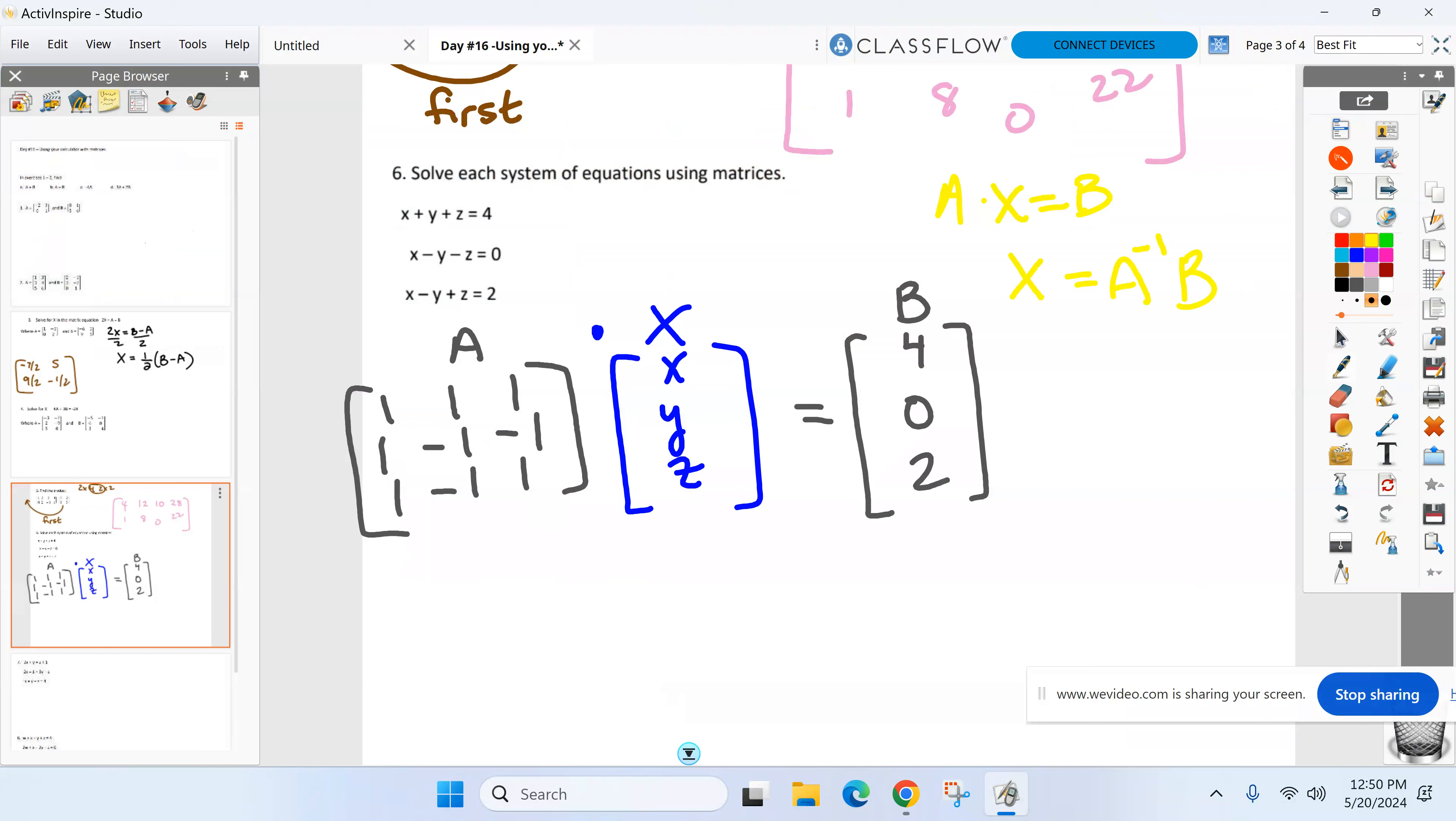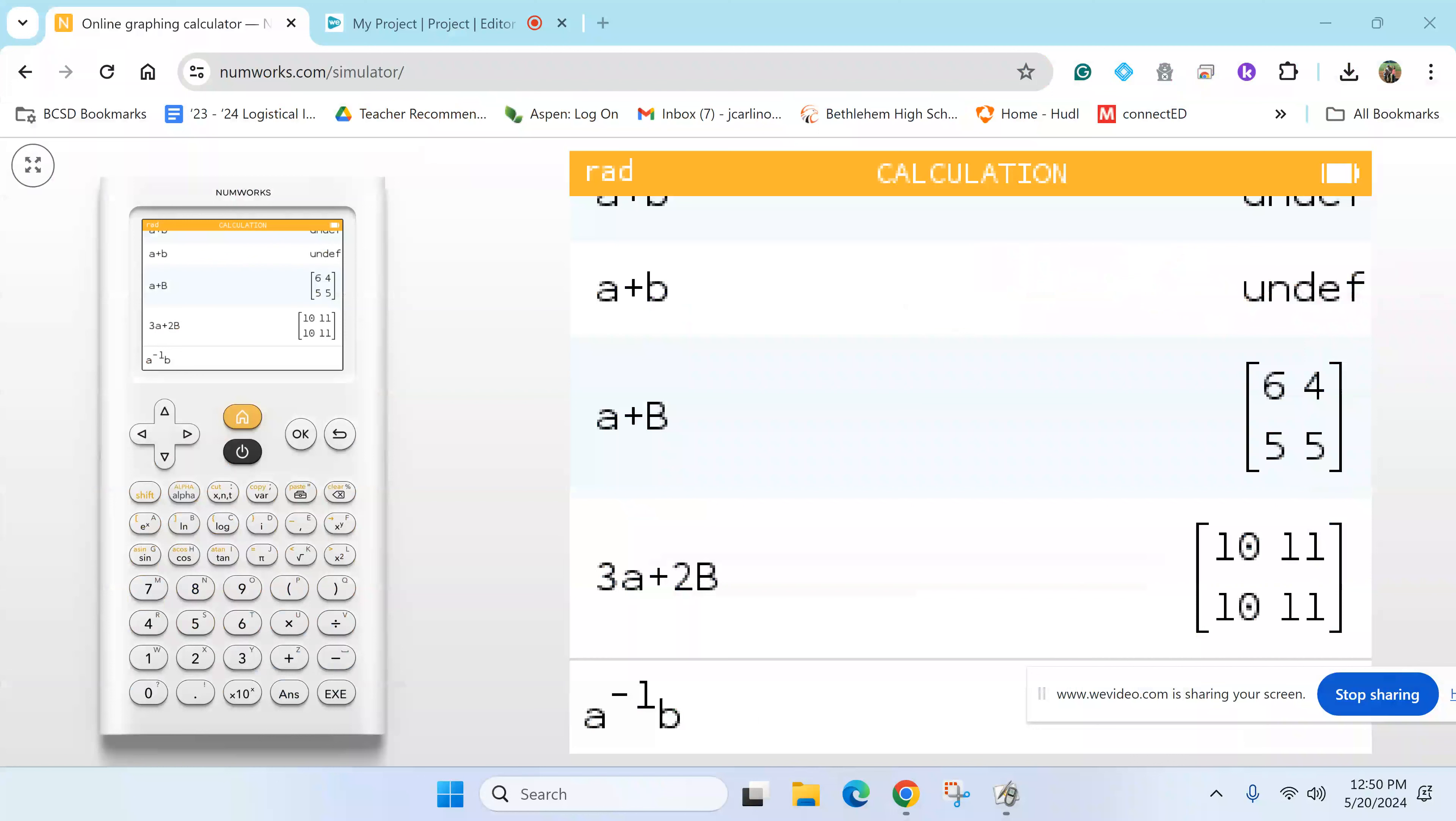How do you store again? Ready? You type in the matrix first. Then you hit - you see your yellow arrow with X to the Y? Second or shift that button. And then you just go alpha A, then hit enter. That'll stay matrix A until you build a new one and call that one matrix A. All right, start on the delta math.